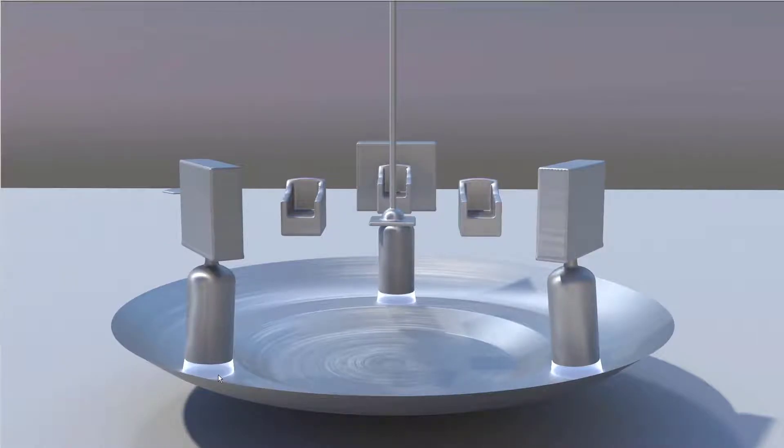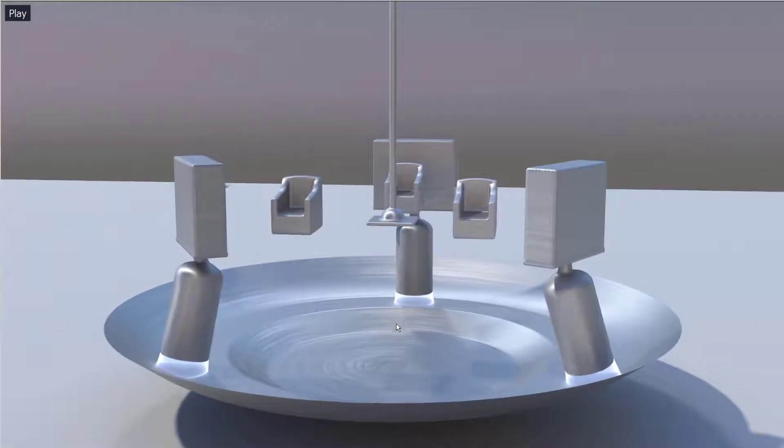Now no one has ever mentioned this. Bob Lazar never mentioned it. No one else has made this connection but these ridges are actually functional and I believe this is intentional. Maybe this is in hover mode of some sort. Basically if the gravity wave emits directly onto this flat ridge then maybe the craft just kind of sits where it is in space.